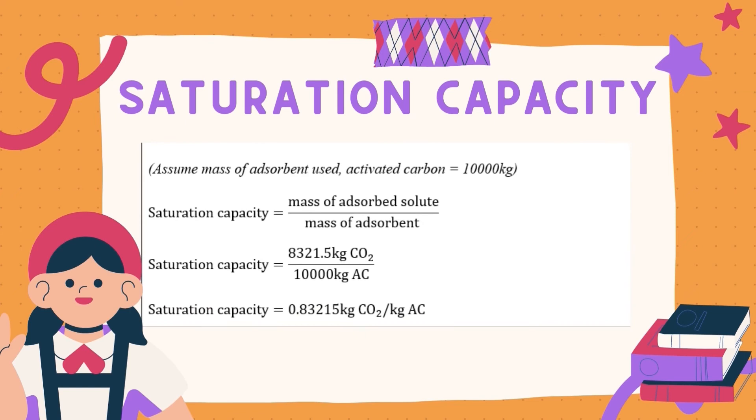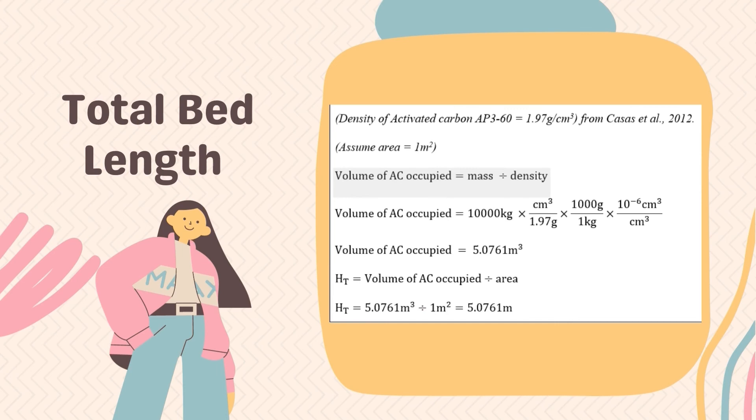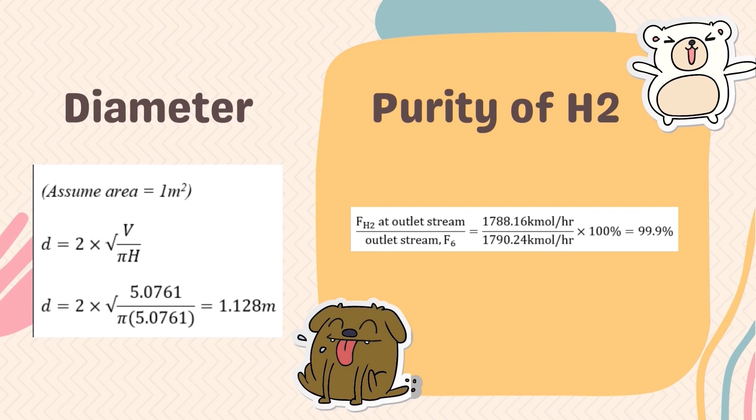Furthermore, to calculate the saturation capacity, the mass of adsorbent used, which is activated carbon, can be assumed as 10,000 kg. When dividing mass of CO2 adsorbed with the mass of activated carbon, the saturation capacity is 0.8325 kg carbon dioxide per kg of activated carbon. To calculate the total bed length, the volume of activated carbon occupied is mass divided by density. The value obtained for the volume of activated carbon is 5.0761 meter cube. So the total bed length is volume of activated carbon divided by 1 meter square, which is the cross-sectional area for H2 enrichment unit. To calculate the diameter of adsorption column, it can be calculated by the formula given in the picture, and the value obtained is 1.128 meter. To validate the purity of H2 produced, the molar flow rate of H2 at stream 6 is divided by the total molar flow rate, then multiply it with 100. So the percentage obtained is 99.9%, which reached the requirement of the statement.